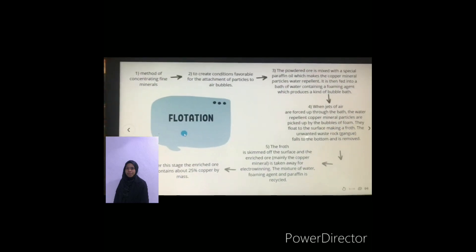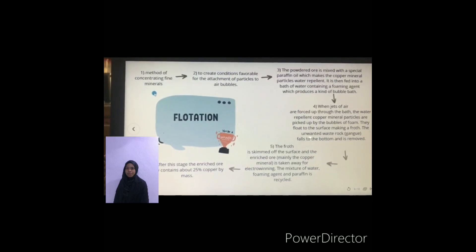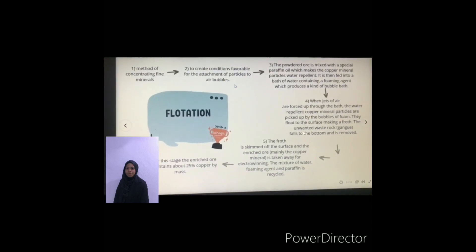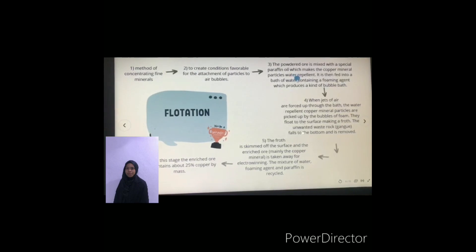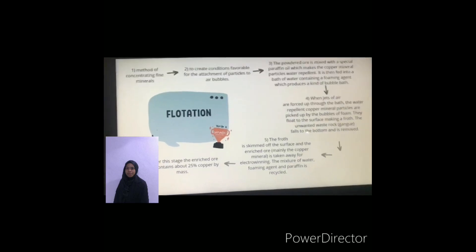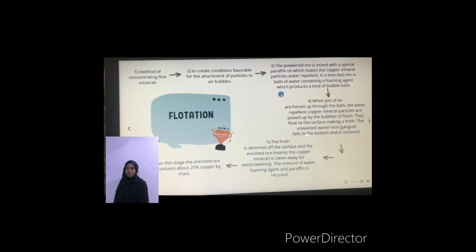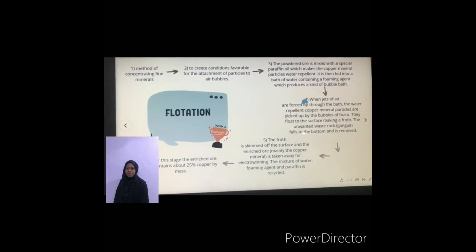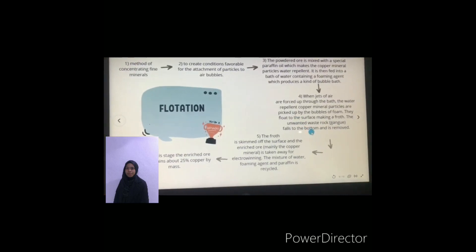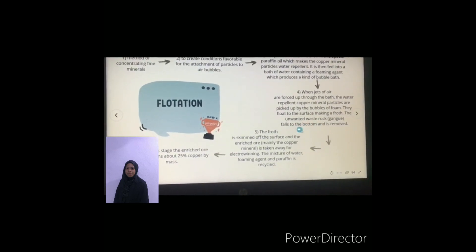After that, we will undergo the flotation process. Flotation process is used for extraction of minerals. The purpose is to maximize oxidative maintenance to create conditions favorable for the extraction. The ore is mixed with special carbon oil which makes the copper mineral particles water repellent. It is then fed into a vat of water containing a foam forming agent which produces a kind of bubble bath. When jets of air are forced up into the vat, the water repellent copper mineral particles attach to the bubbles and float to the surface making foam at the top of the vat. The unwanted base rock remains in the bottom.